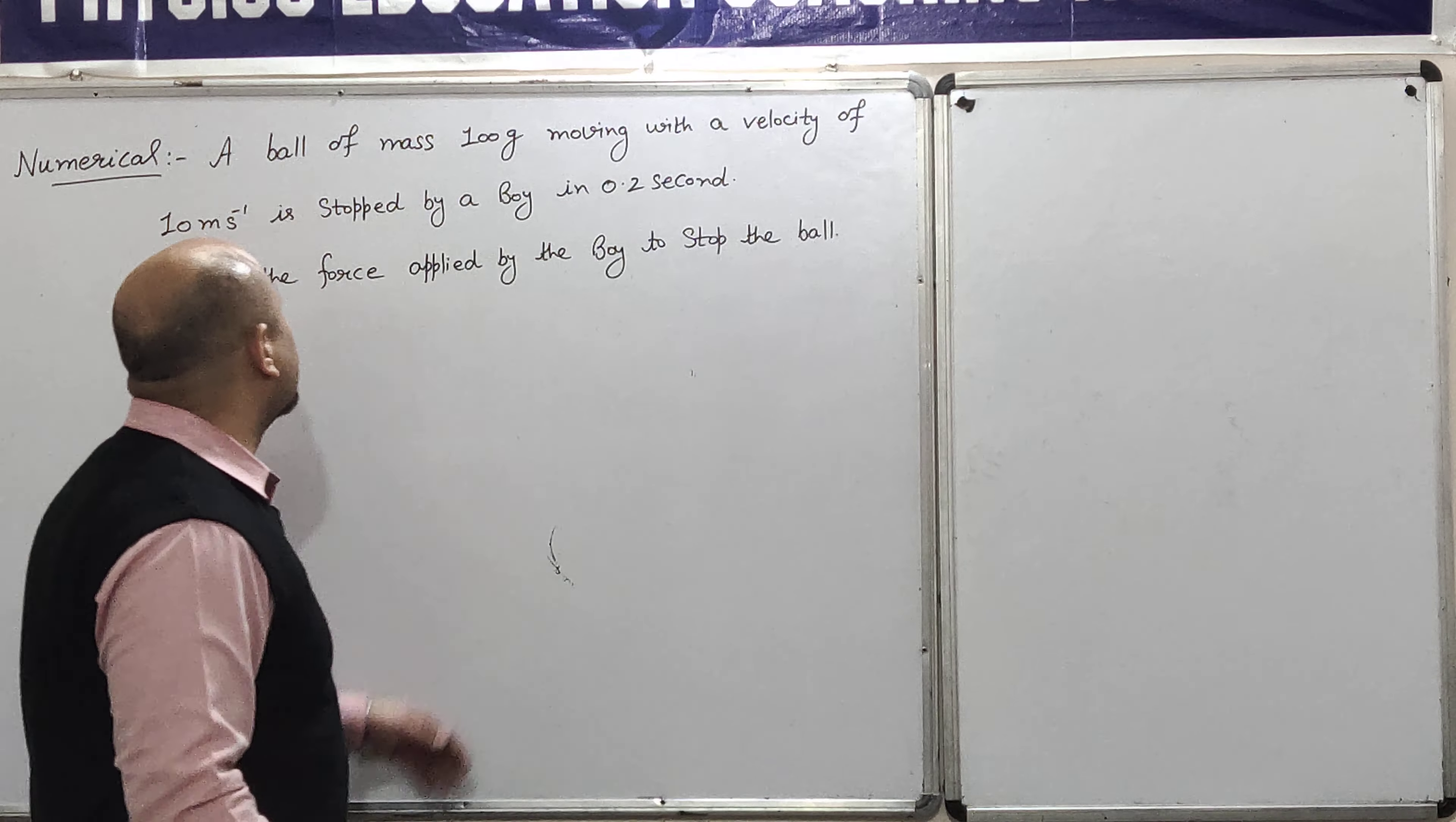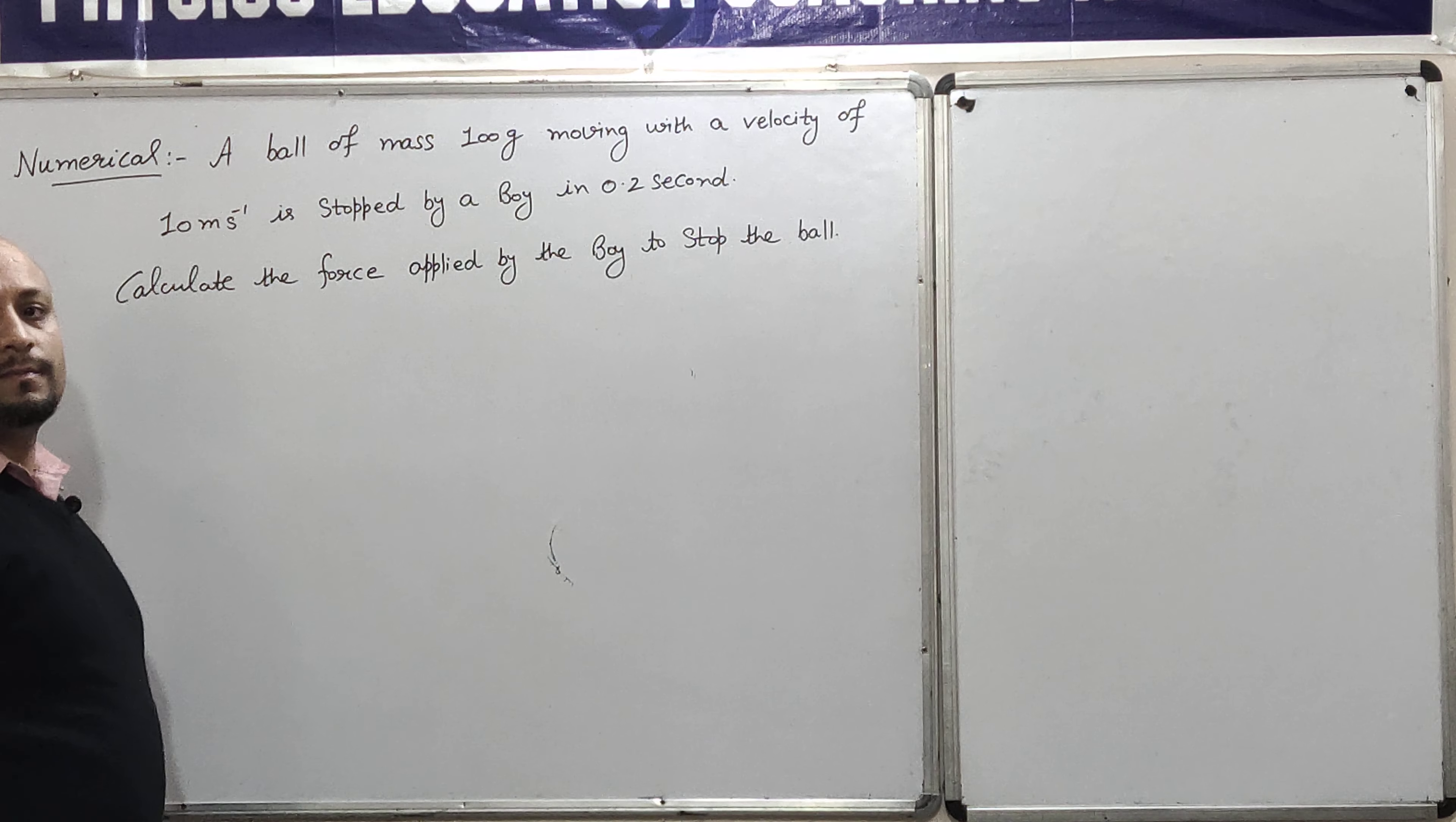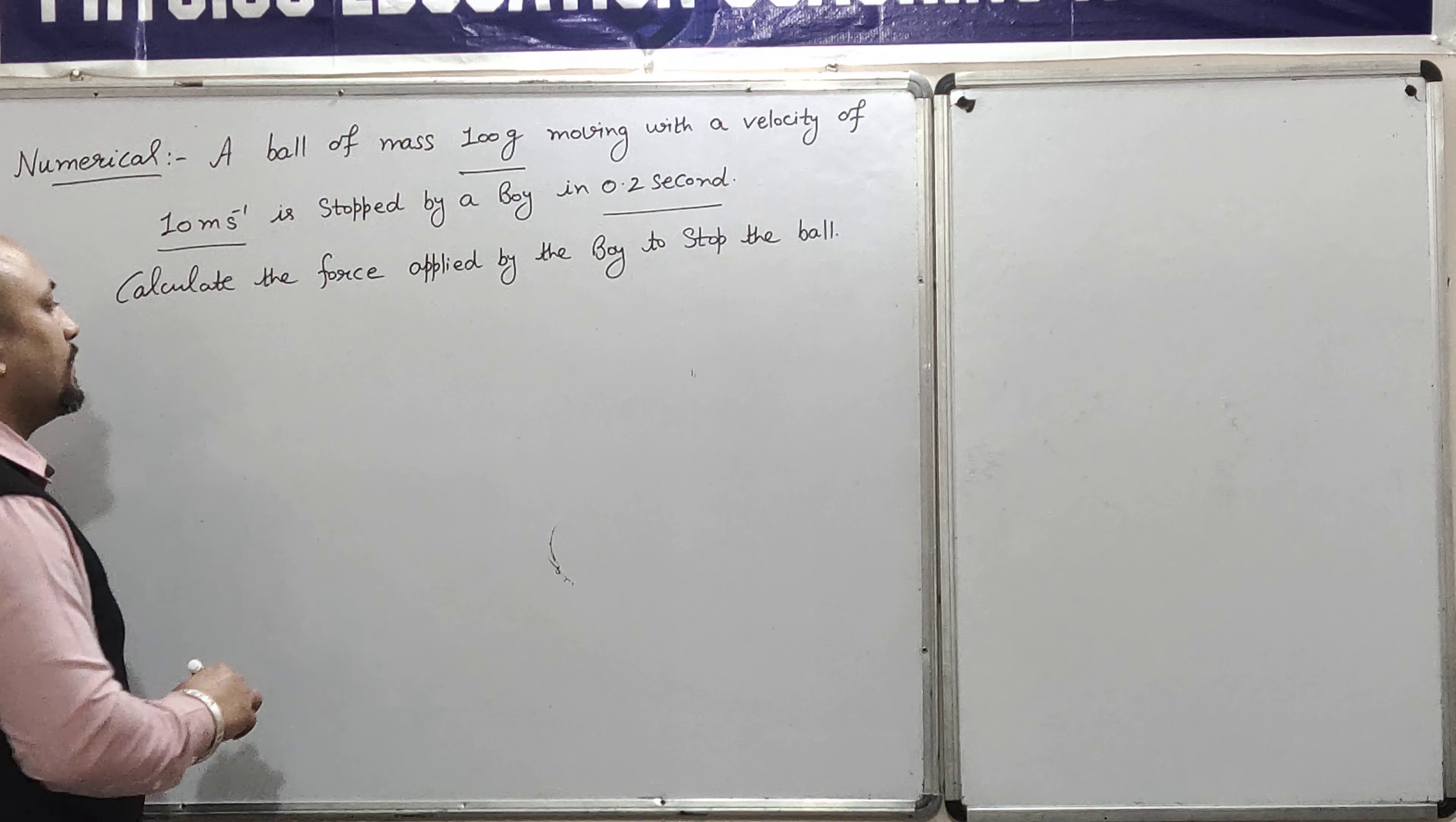The numerical is on my back screen. The numerical is a ball of mass 100 grams moving with a velocity of 10 meters per second is stopped by a boy in 0.2 second. Calculate the force applied by the boy to stop the ball. I am again repeating the statement of the numerical. The numerical is a ball of mass 100 gram moving with a velocity of 10 meter per second. It is stopped by a boy in 0.2 second. Calculate the force applied by the boy to stop the ball.